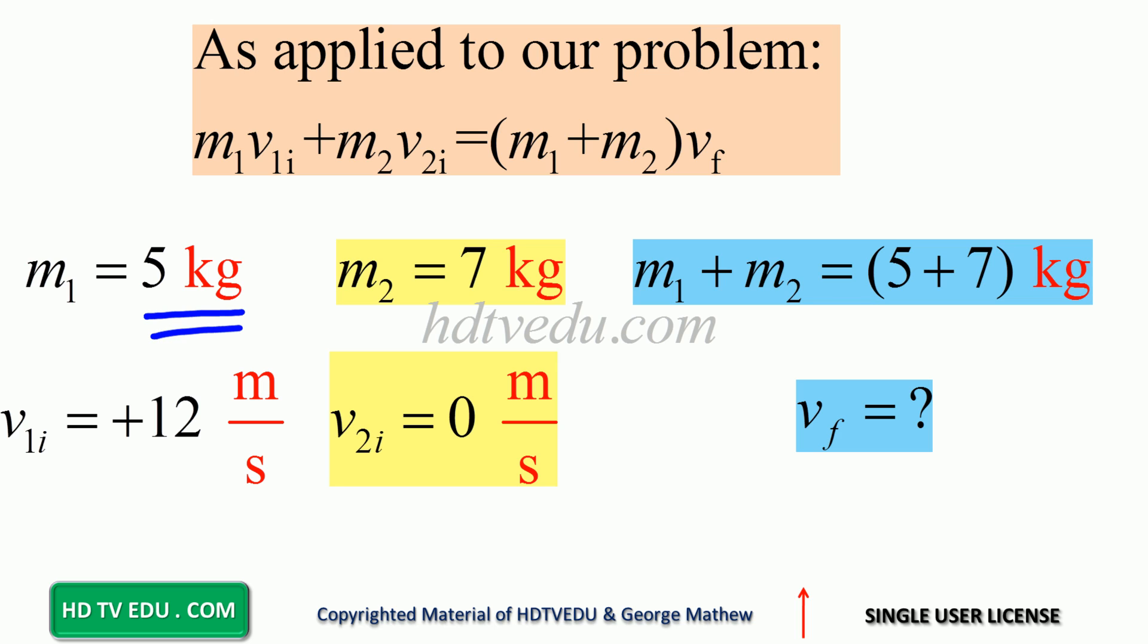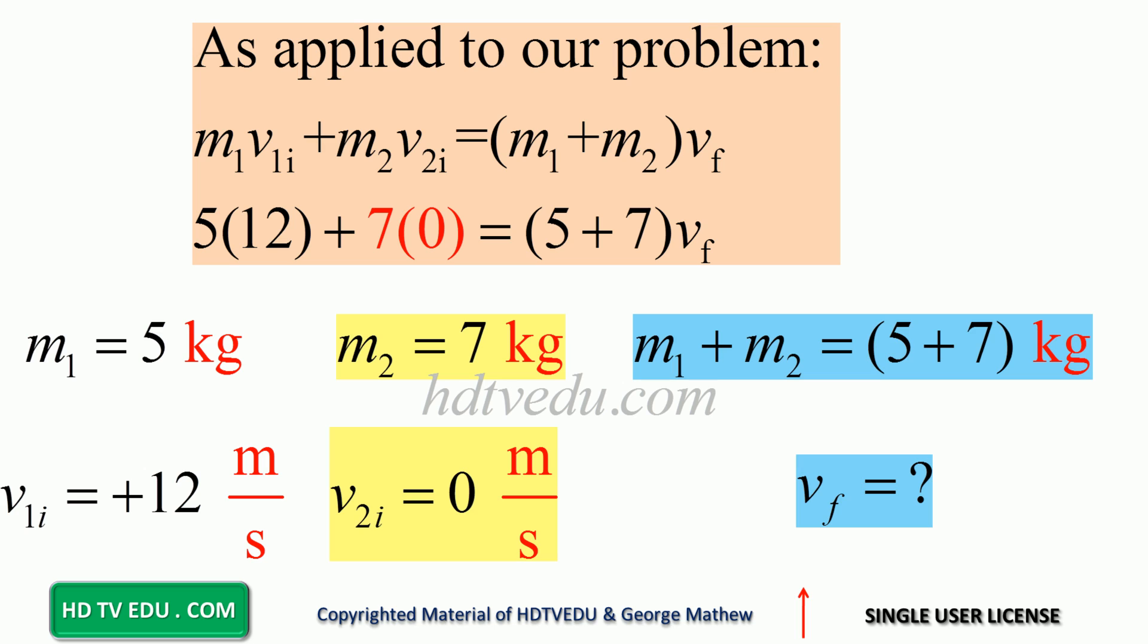Our mass is 5 kg, velocity is 12, second mass is 7 kg at rest. After collision we combine the masses, 5 plus 7. Question is: what is the speed after collision? So we substitute: m1 is 5, v1i is 12, m2 is 7. How about the speed of second mass? Zero.